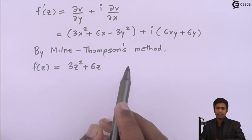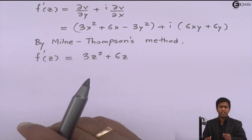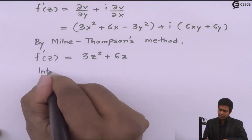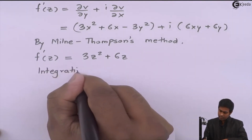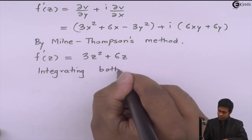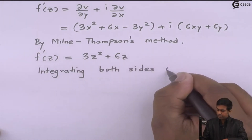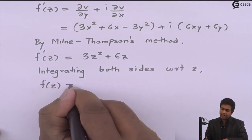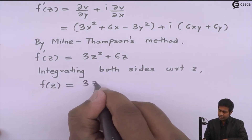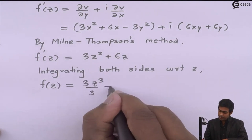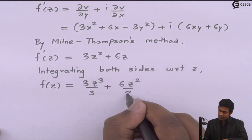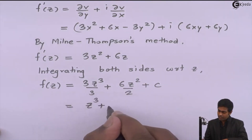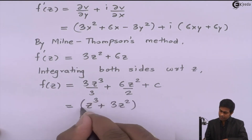Now integrating both sides with respect to z to get f(z): integrating 3z² gives 3z³/3 = z³, and integrating 6z gives 6z²/2 = 3z². Therefore, the analytic function is f(z) = z³ + 3z² + c.